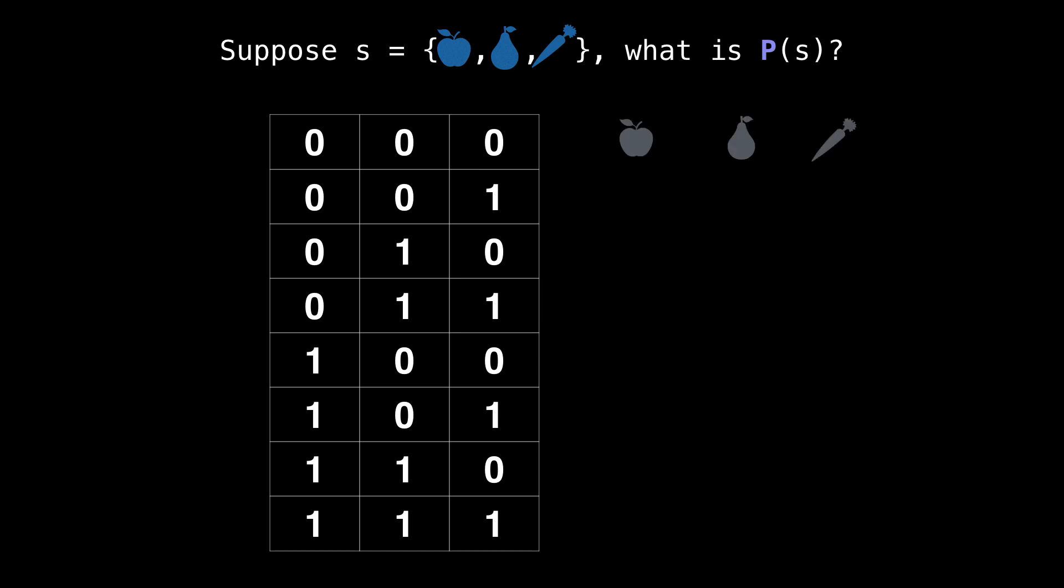So for the first bit string of all zeros, this represents the empty set. So no items were selected. The second bit string has its rightmost bit set to one. So that bit string represents the set of only selecting the carrot.